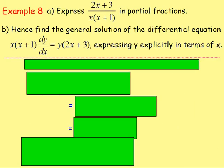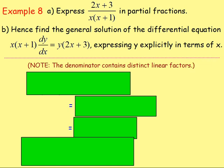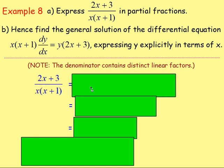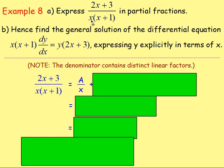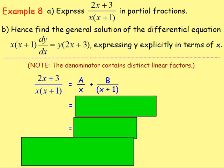Example 8. First of all, express (2x plus 3) over x(x plus 1) in partial fractions. And then for part b, hence find the general solution of the differential equation x(x plus 1) dy/dx equals y(2x plus 3), expressing y explicitly in terms of x. You can see that the denominator contains distinct linear factors, so we can write that fraction as a over x plus b over (x plus 1).